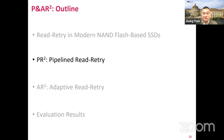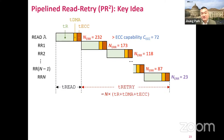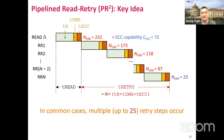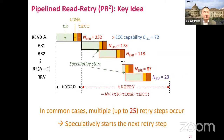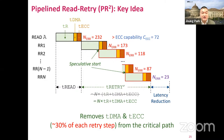Now let me introduce our key ideas to reduce the read-retry latency. Our first observation is that in the common case, once a read fails, multiple read-retry steps are required for correctly reading the page. Our first key idea — called pipeline read-retry, or PR2 in short — is that instead of waiting for the ECC decoding of each retry step, it starts the next step as soon as the sensing operation at the chip is finished, speculating that the next retry step would likely be needed. This idea can significantly reduce read-retry latency by removing data transfer and ECC decoding from the critical path, which contribute to almost 30% of the latency of each retry step.